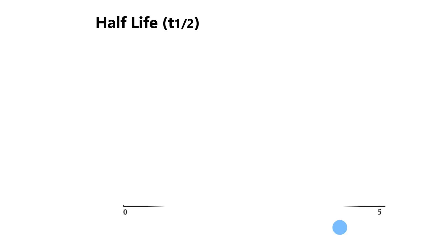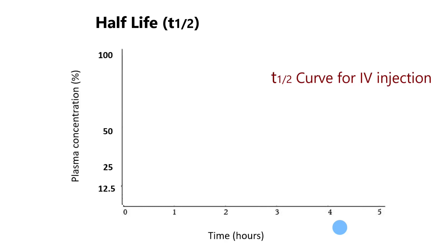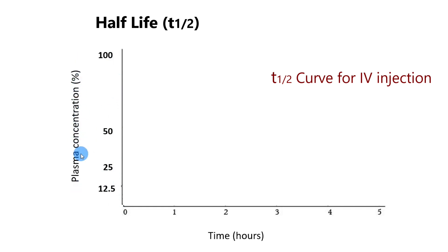Let's have a look at the graph. On the x-axis there is time and on the y-axis there is plasma concentration of the drug as a percentage. The x-axis is the time axis, let's say in hours: 0, 1, 2, 3, 4, and 5 hours. Up here is the plasma concentration of the drug, and this is our curve.